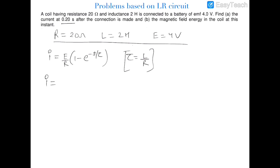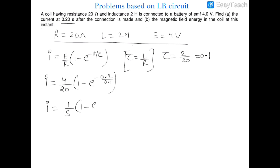Substituting the values: E = 4, R = 20, and the time constant τ = L/R = 2/20 = 0.1. So this is e^(−0.2/0.1) = e^(−2). Therefore i = (1/5)(1 − e^(−2)) = (1/5)(1 − 1/e²). The value of e is 2.718, so we can calculate this further.